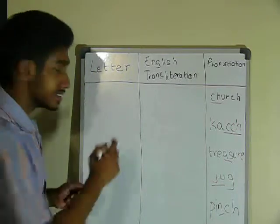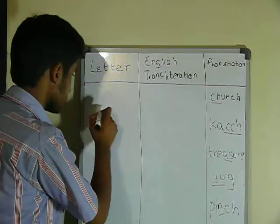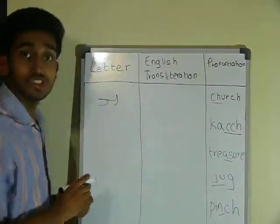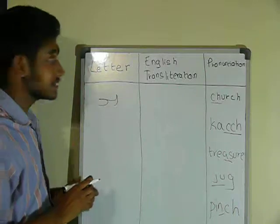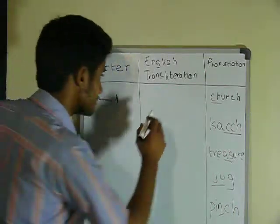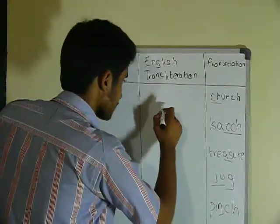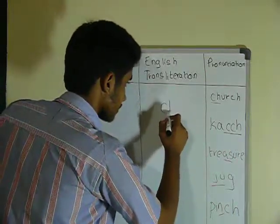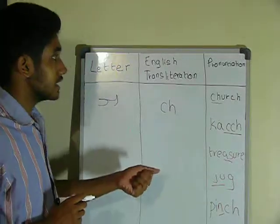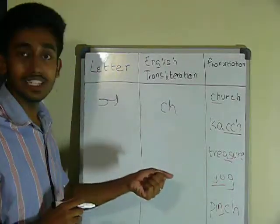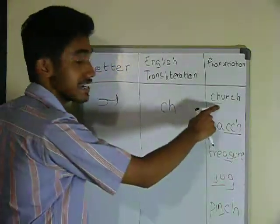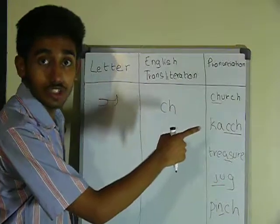The next letter is CH. Its English transliteration is C and H. Its pronunciation is same as CH in church.